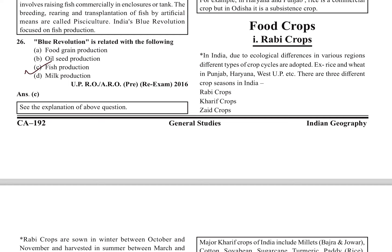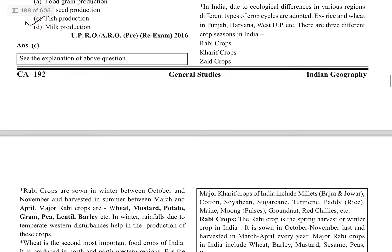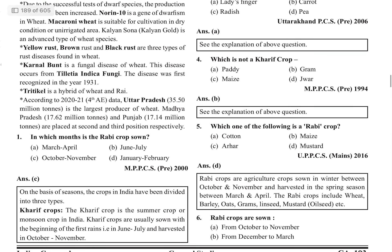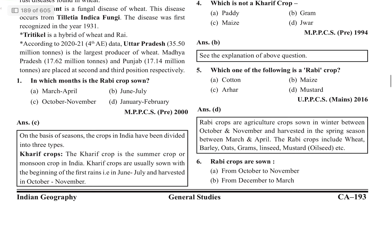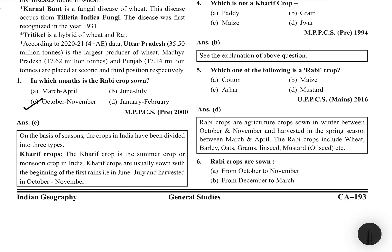We will start with food crops. In food crops, the first crop is the Rabi crop. Rabi crop mainly includes wheat. Rabi crop is sown in October-November and harvested in March-April. Kharif crop is called the summer crop or monsoon crop. It is sown with the beginning of the first rains in June-July and harvested in October-November.